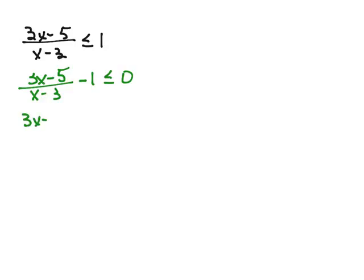So 3x minus 5 over x minus 3 minus, I want to rewrite 1 so that it has a denominator of x minus 3 and so that means that the numerator would also have to be x minus 3.